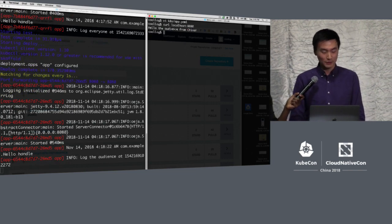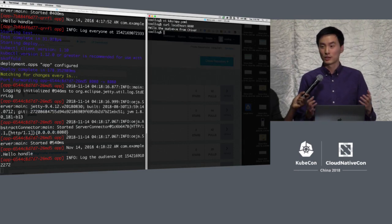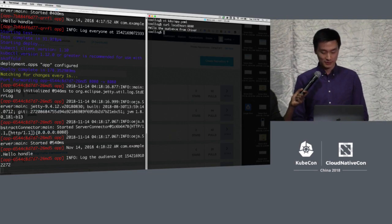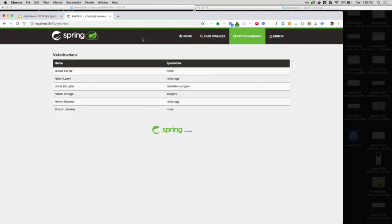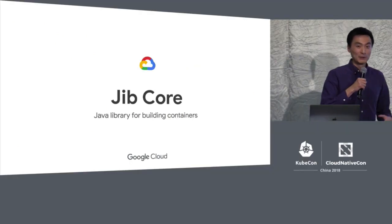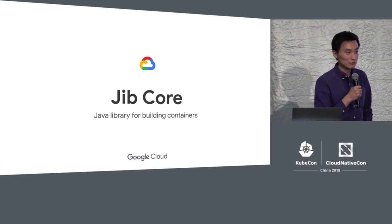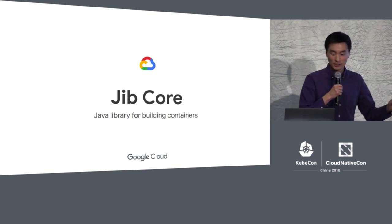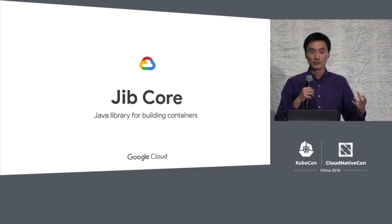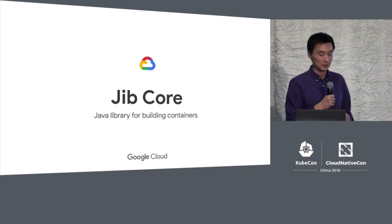That's Skaffold. Of course, you can use multiple artifacts in multiple languages — you can mix and match Java with Node.js and other languages. Something else we've built recently is a Java library for building containers called Jib Core. This is actually the library that powers the Jib Maven plugin and Jib Gradle plugin, and we've released it as its own library for use in Java.